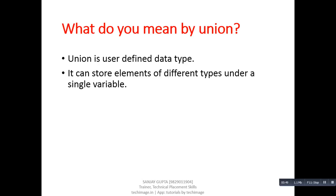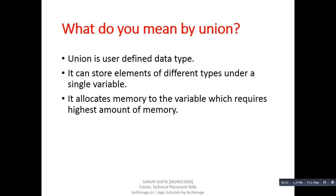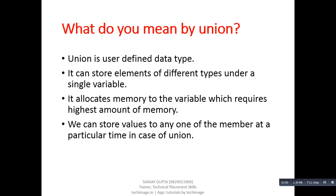A union can store elements of different types under a single variable. It allocates memory to the variable which requires the highest amount of memory. We can store values to only one of the members at a particular time in case of a union.